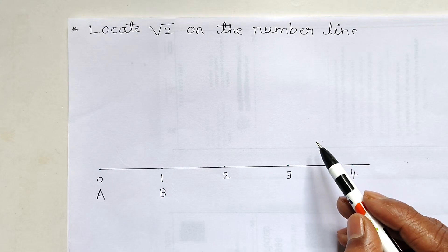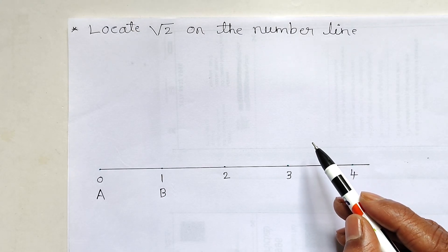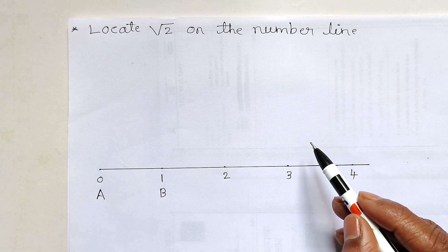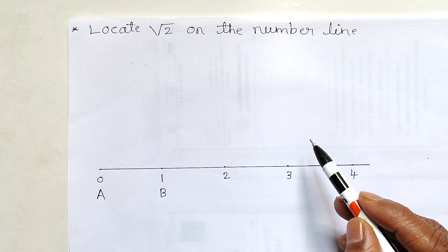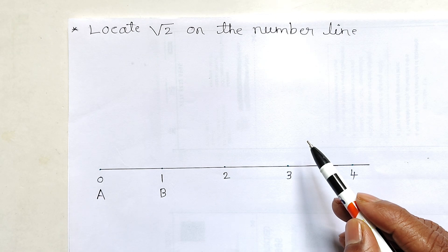Dear students, welcome to RV tutorials. In this video, we are going to locate the irrational numbers on a number line — for example, root 2 and root 3. Irrational numbers are those numbers that cannot be written as a fraction.